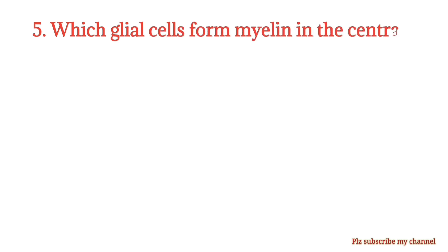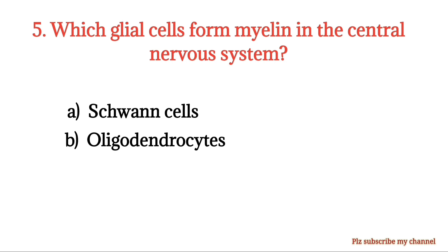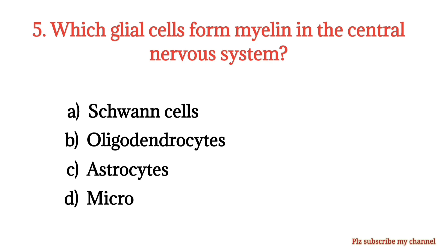MCQ number 5. Which glial cells form myelin in the central nervous system? Option A: Schwann cells. Option B: Oligodendrocytes. Option C: Astrocytes. Option D: Microglia. The right option is Option B.